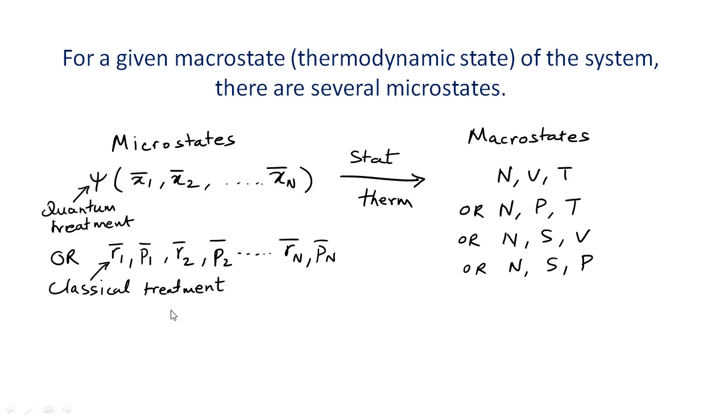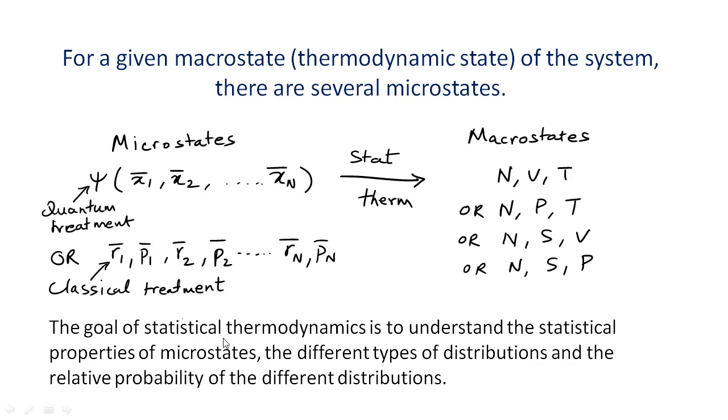The goal of statistical thermodynamics is to understand the statistical properties of the microstates, the different types of distributions and the relative probability of the different distributions. I know I have not really defined the concept of a distribution and I need to do that. So to fully appreciate the idea of entropy and the second law of thermodynamics we need to study some basic ideas of probability which we will do in the next lecture.